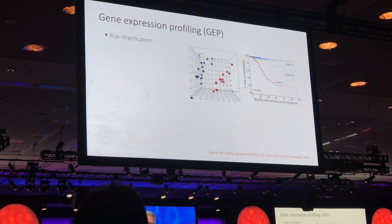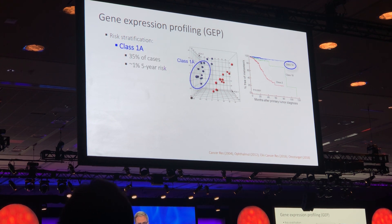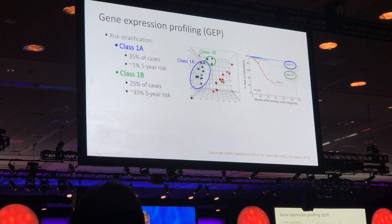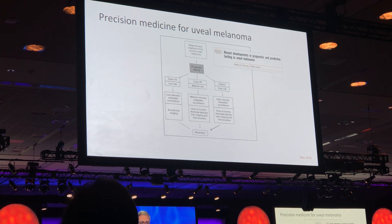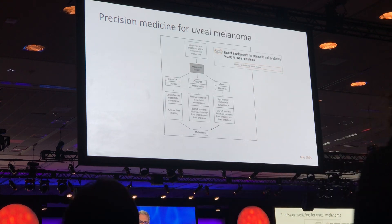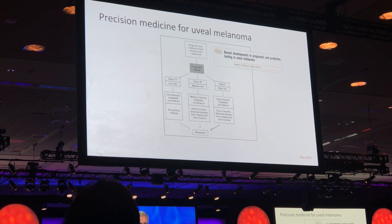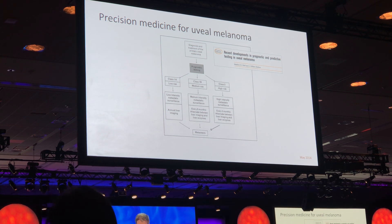We now have excellent risk stratification using gene expression profiling. We can divide patients into class 1A, who have very low risk of metastasis; class 1B with intermediate risk; and class 2 with a high risk of metastasis. These are the ones associated with BAP1 mutations, about 30 to 40% of patients. We can use this information in routine patient care for stratification of systemic surveillance, with the 1As getting low surveillance and the class 2s getting high-intensive surveillance for early detection of metastatic disease.